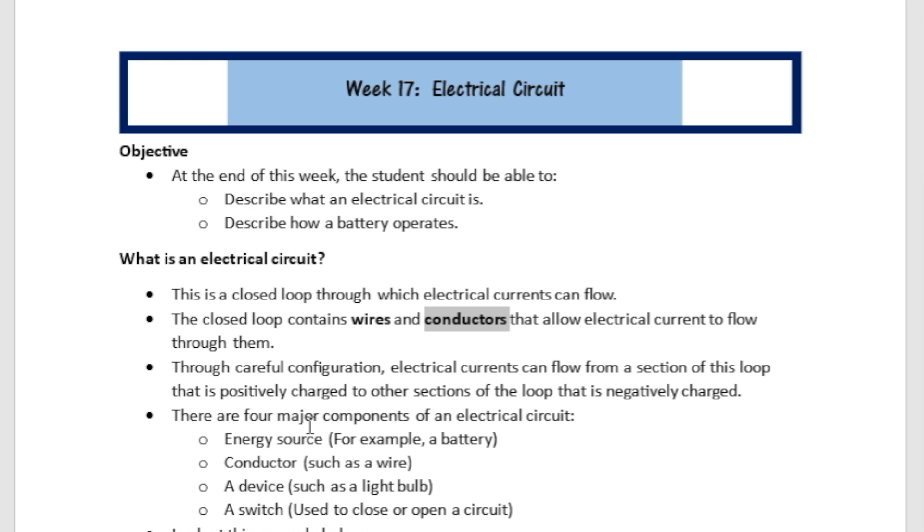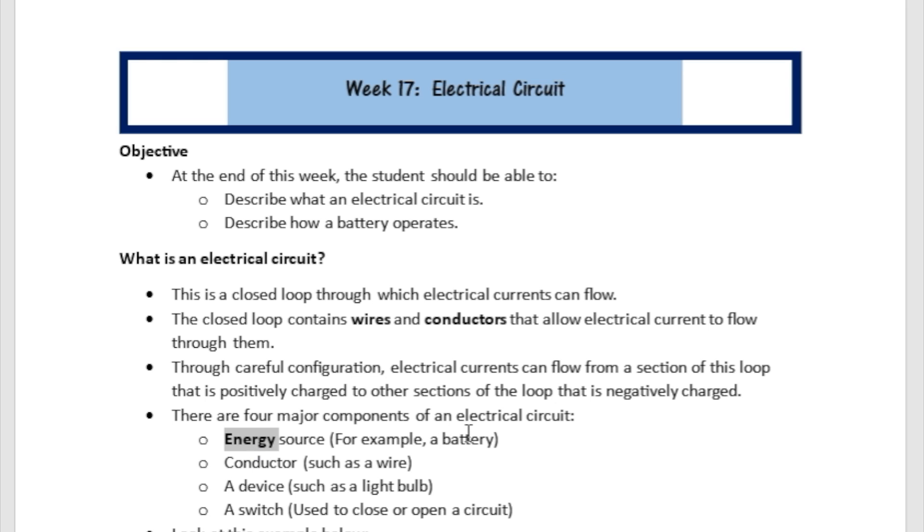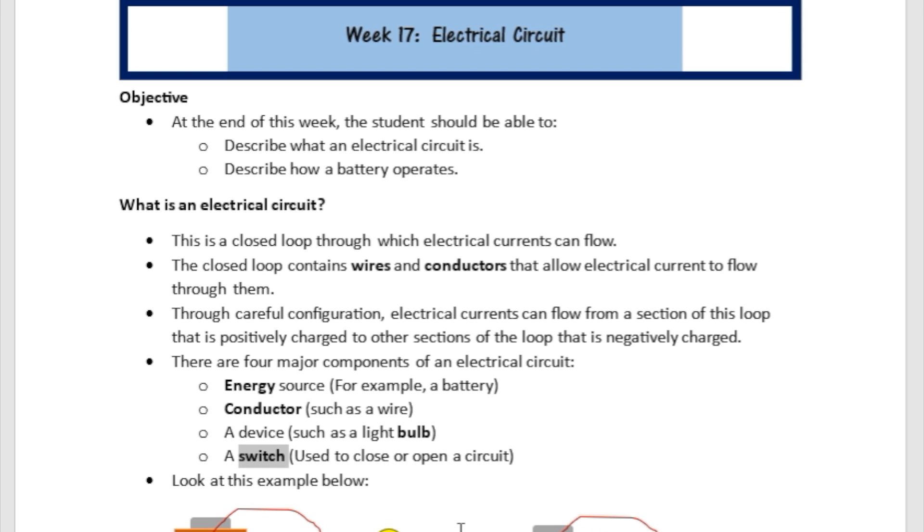There are four major components of an electrical circuit. There is an energy source, which is like a battery. There is a conductor, which is like these wires here you can see. There is a device, which is like the bulb that you can see over here. And there is a switch. So let's look at this closed circuit.